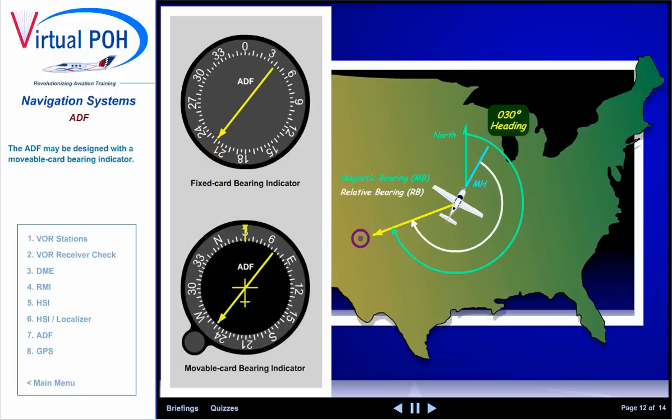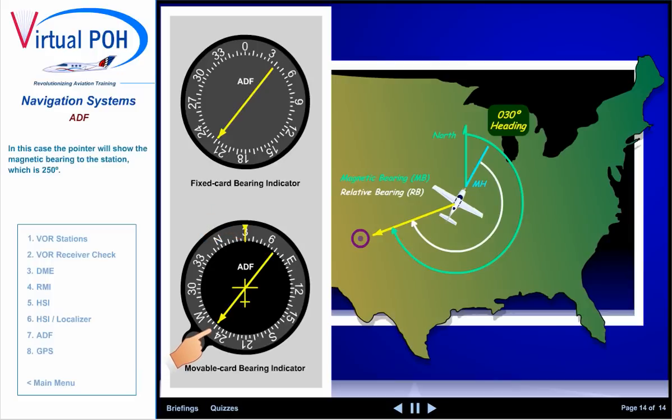The ADF may be designed with a moveable card bearing indicator. The card can be rotated to place the airplane's heading under the top index. In this case, the pointer will show the magnetic bearing to the station, which is 250 degrees.